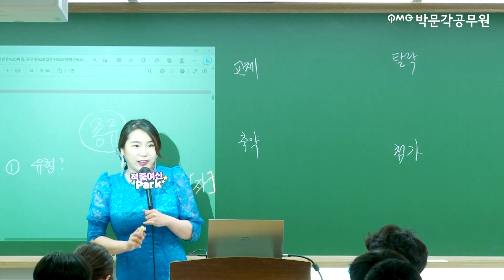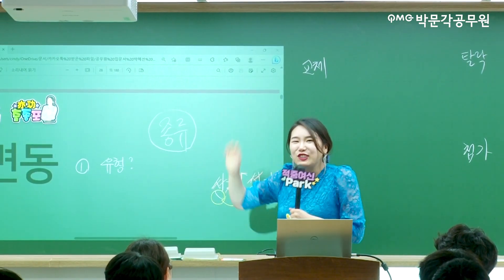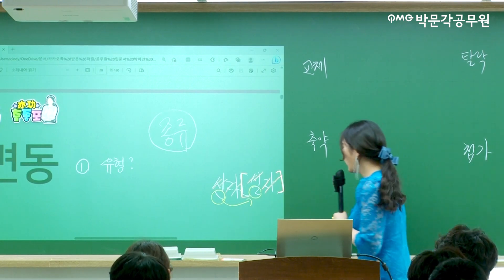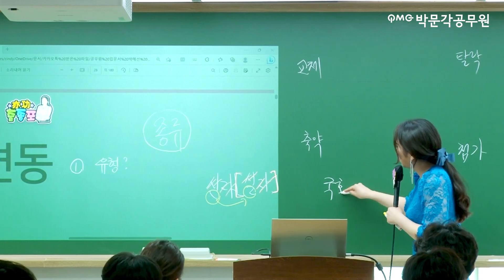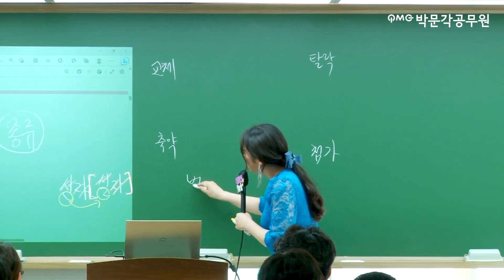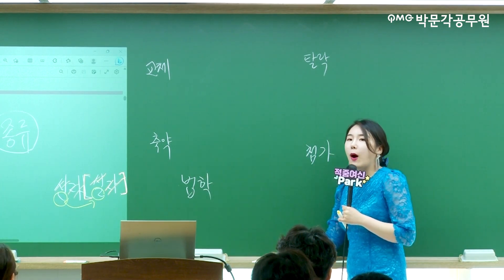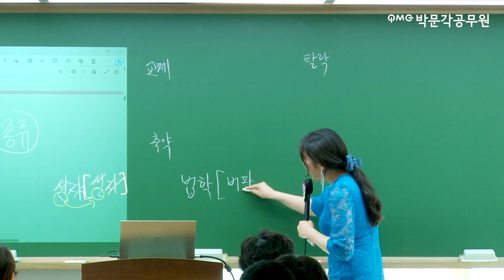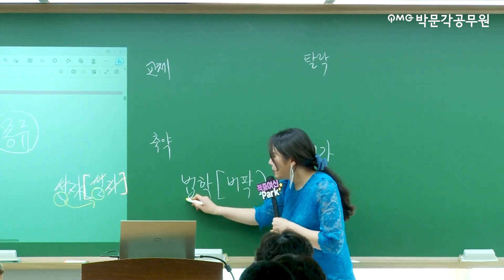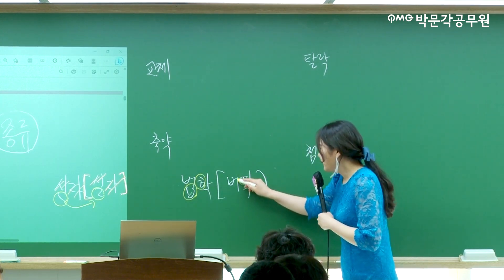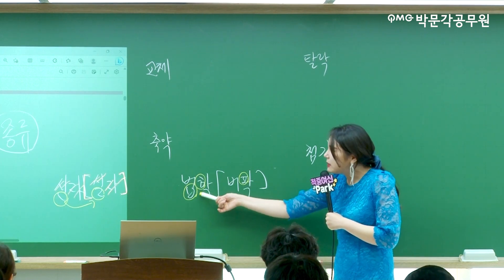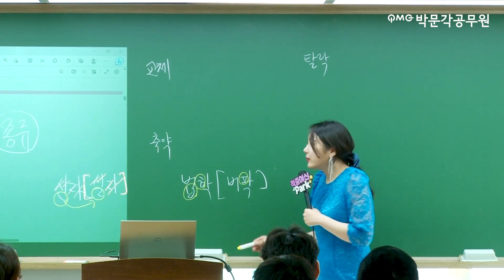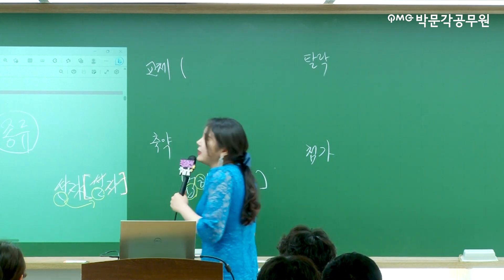'법학'을 발음하면 [버팍]이 되죠. 숨은 그림 찾기를 해보면, 비읍과 히읗이 빨리 발음되면 피읍이 되거든요. 비읍과 히읗이 합쳐져서 하나의 피읍으로 된다는 건 어떤 유형에 속하냐면 축약입니다. 교체는 음운 개수의 변화가 없어요.